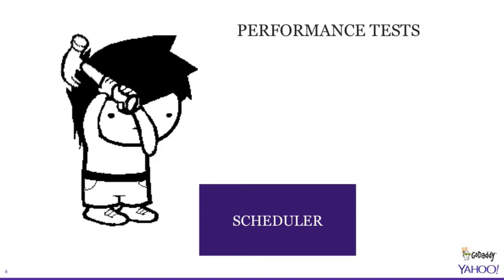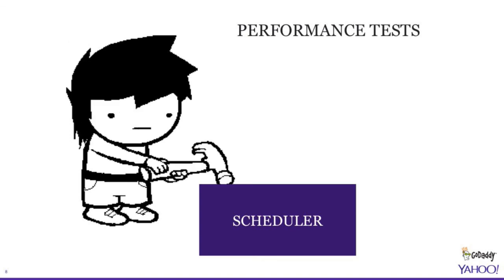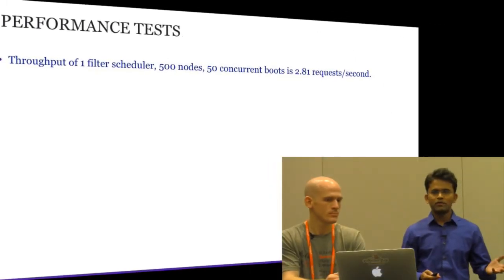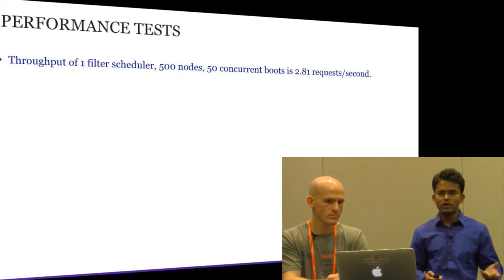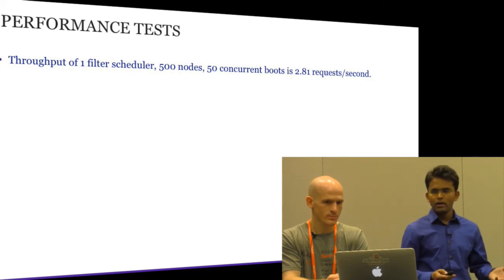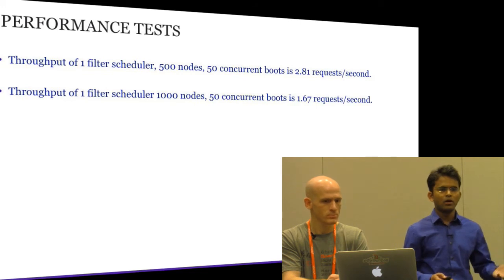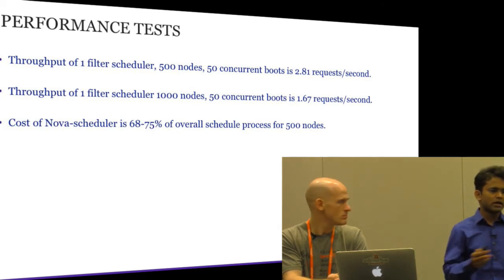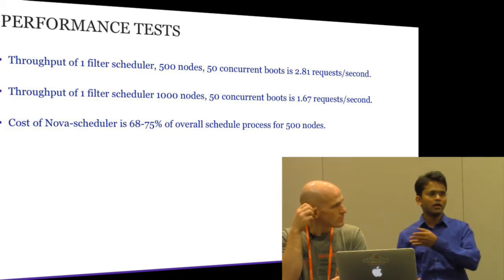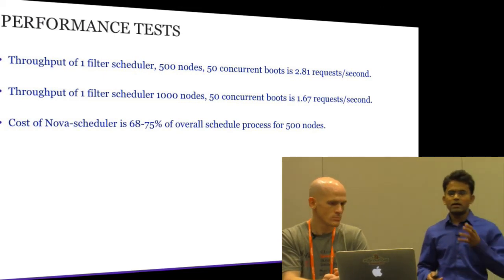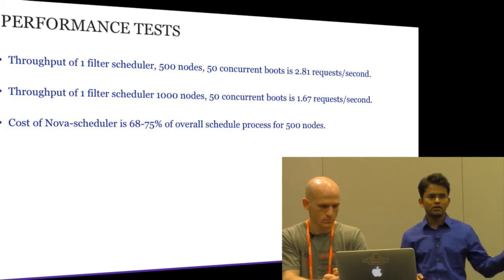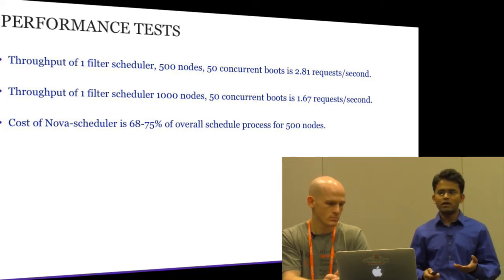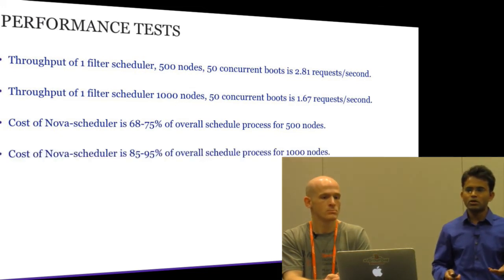Looking at some performance tests: with 500 nodes inventory (fake inventory), 50 concurrent boots, and one filter scheduler, throughput is 2.81 requests per second. If we increase to 1000 nodes, it drops to 1.67 requests per second — pretty low. When we measured the time spent by the scheduler process individually, across the chain of Nova API, conductor, scheduler, messaging layer, and compute, the Nova scheduler itself consumes 68 to 75% of the overall scheduling process time at 500 nodes, and 85 to 95% at 1000 nodes.